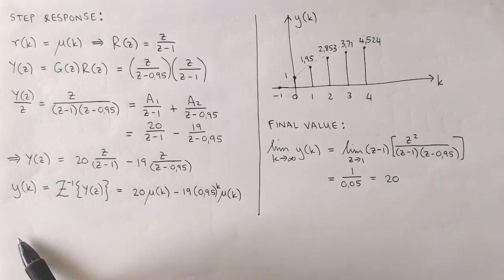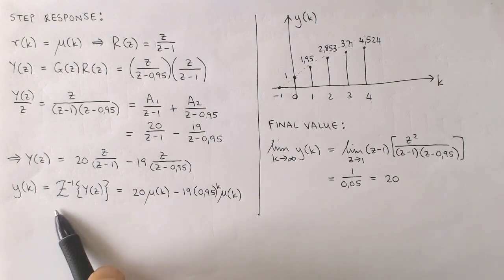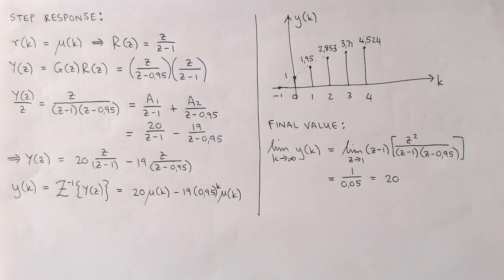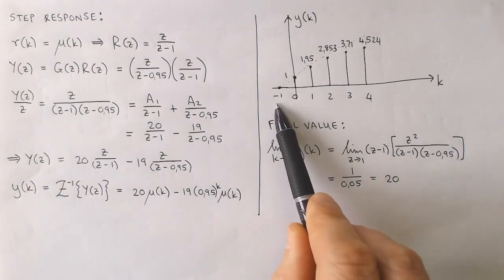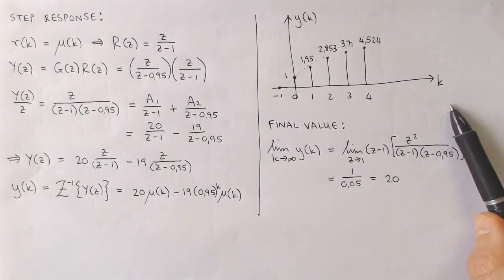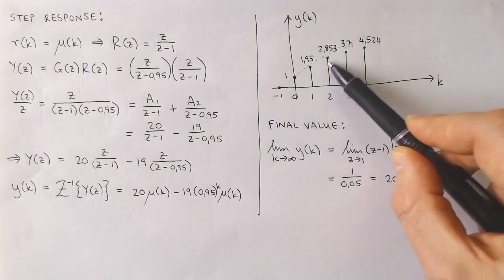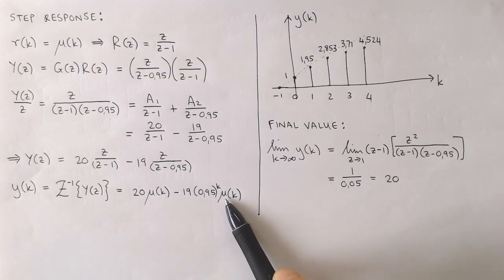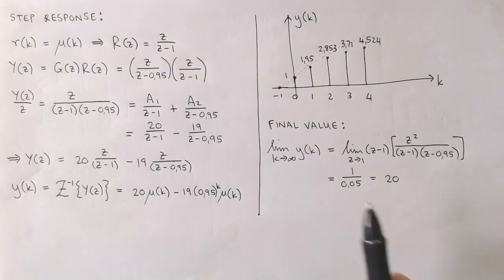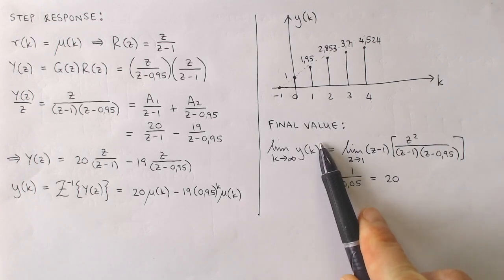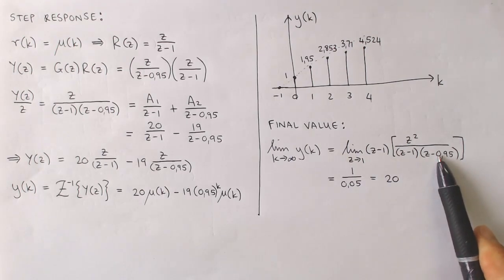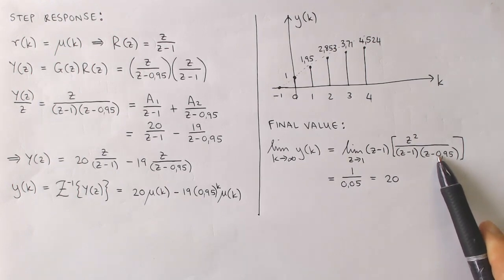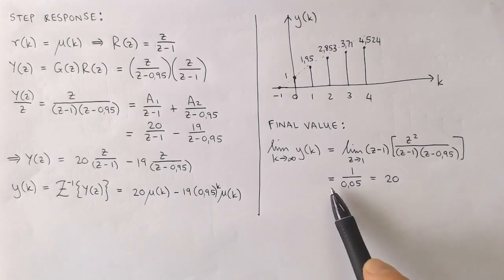Using the z-transform tables we find the expression for the output, which can be plotted to show that the system displays a slow first order response to the step input. To determine the steady state value we can use the time domain description of the output, or apply the final value theorem to the z-transform of the output signal. After applying the final value theorem, the steady state value is calculated to be 20.